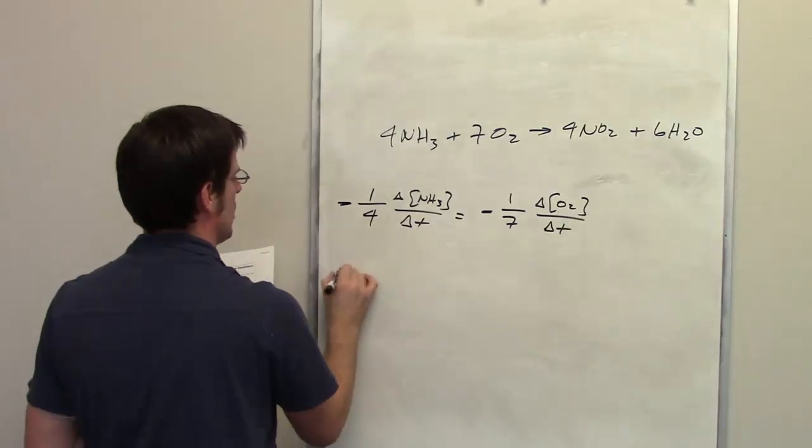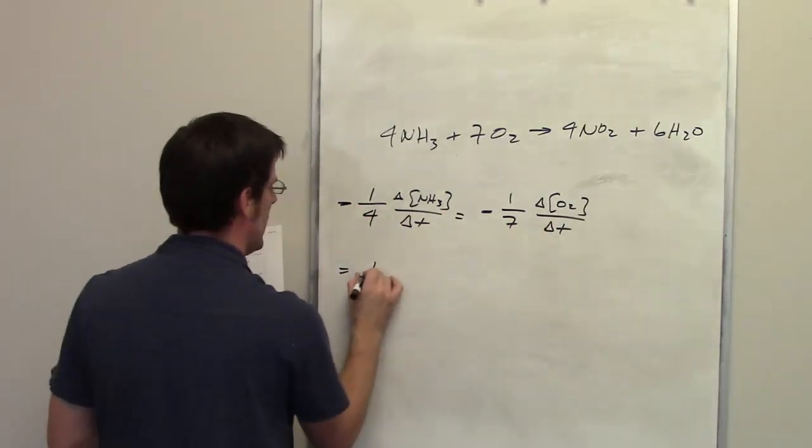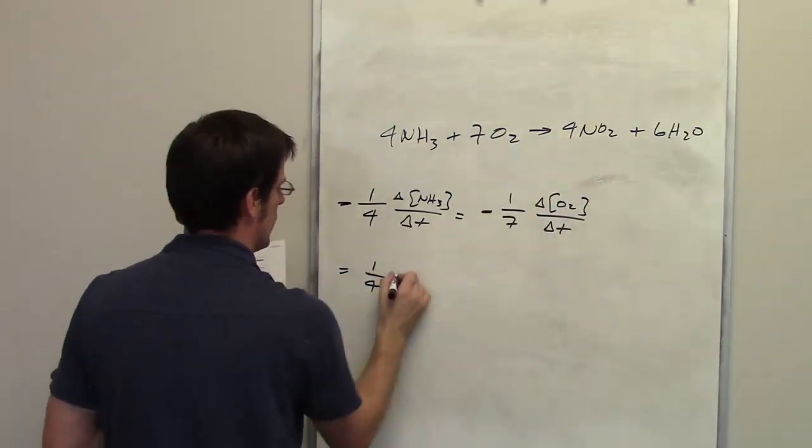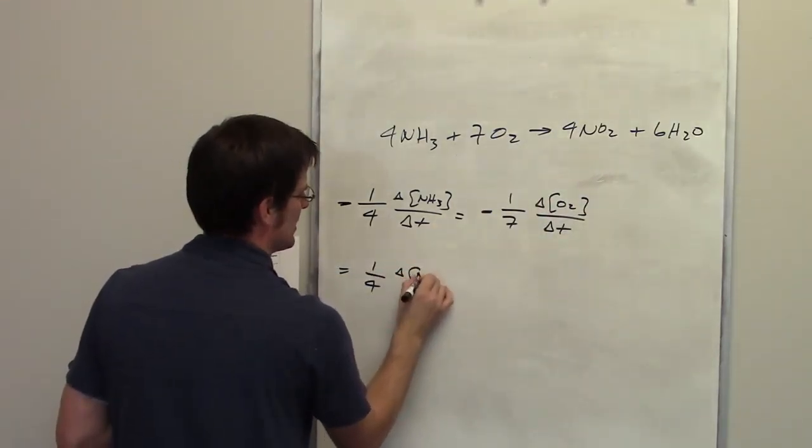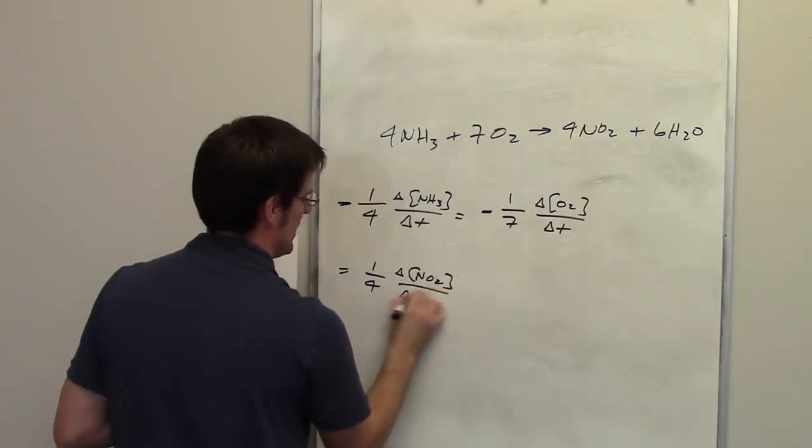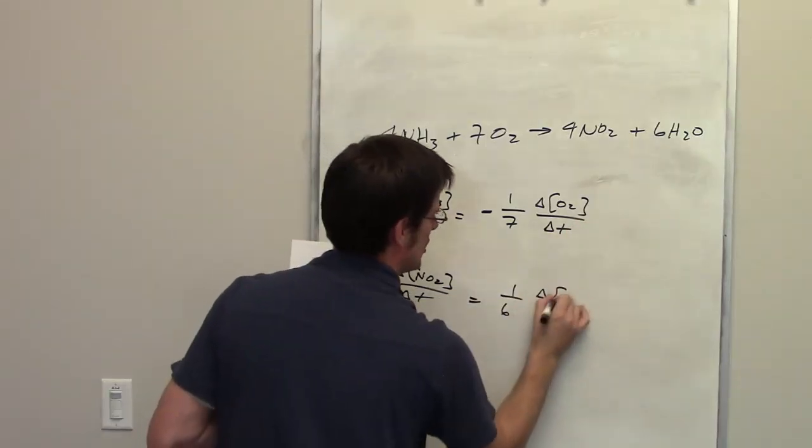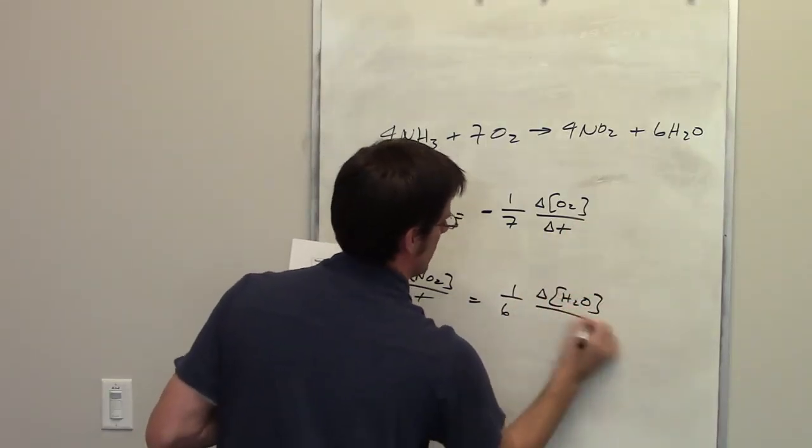and all of these are equal to positive 1 over—because I'm talking about a product now—the coefficient 4 times the change in concentration of NO2 over delta t, which equals 1 over the coefficient 6 times the change in concentration of water over delta t.